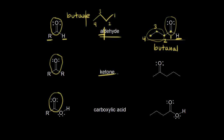Next, let's look at a ketone. A ketone has an R group on one side of the carbonyl and an R group on the other side of the carbonyl. For our ketone example, we're going to number to give our carbonyl the lowest number possible. So we start numbering from the left side: carbon one, the carbonyl carbon is carbon two, carbon three, carbon four, and carbon five. So we have a five-carbon ketone.